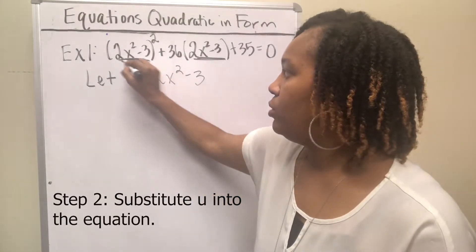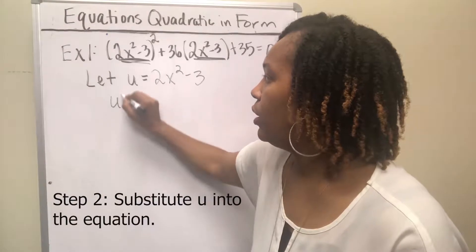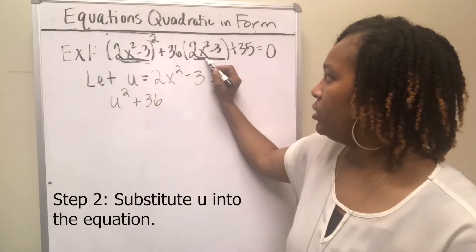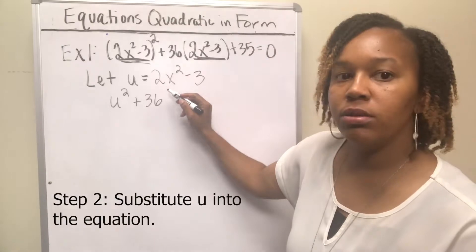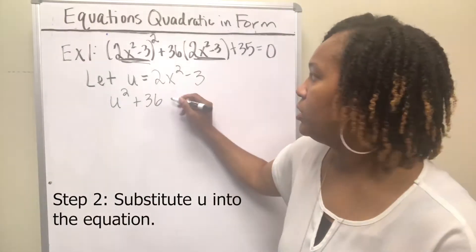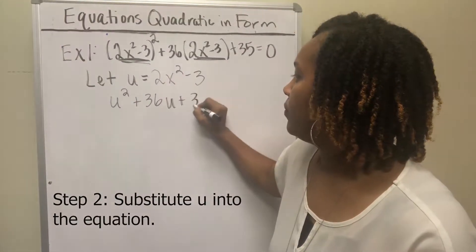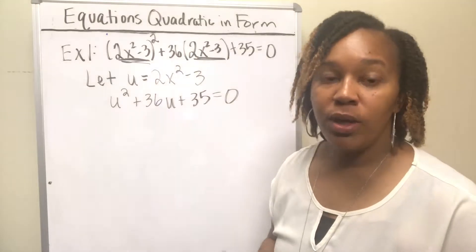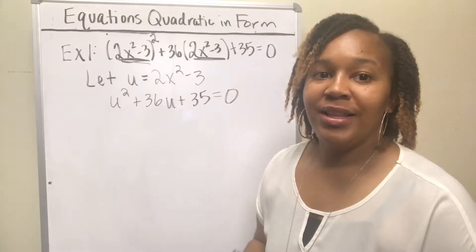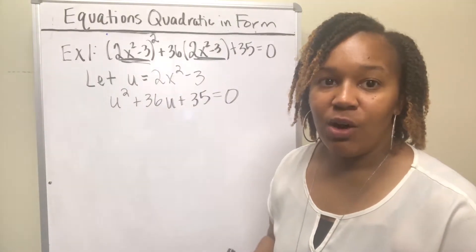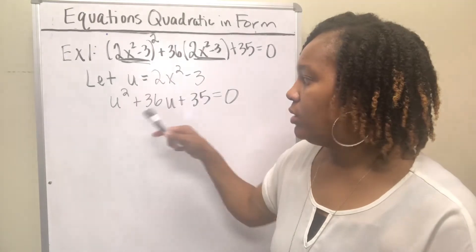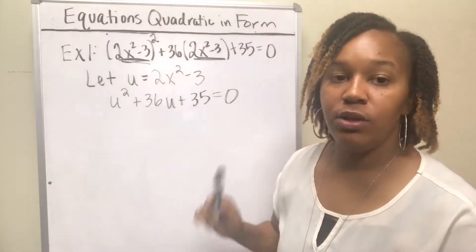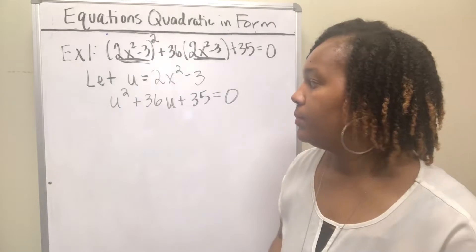I will substitute u in here and get u² + 36u + 35 = 0, substituting u in because we let u equal 2x² − 3. And once I substitute u in, we get a quadratic equation. That is why it's called quadratic in form — if you substitute a variable in to replace that additional stuff, then you end up with a quadratic equation.